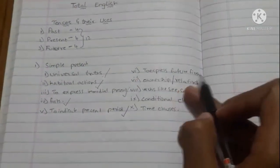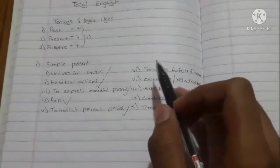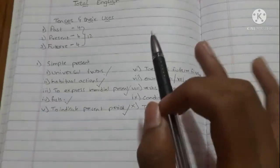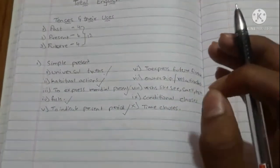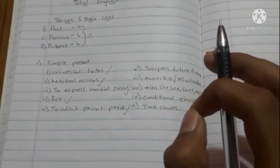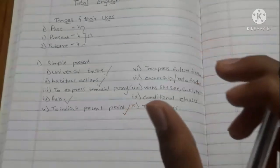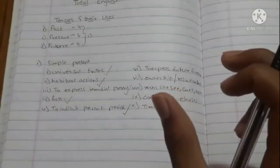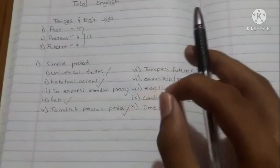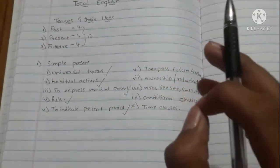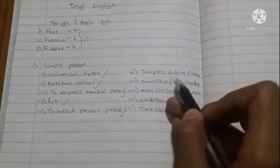Now, to express future fixed actions — for example: the school holiday begins next week, the match starts at 5 PM. When the time is already fixed for anything, that also comes under simple present. For example: our school is at eight o'clock every morning. This comes under expressing future fixed actions.